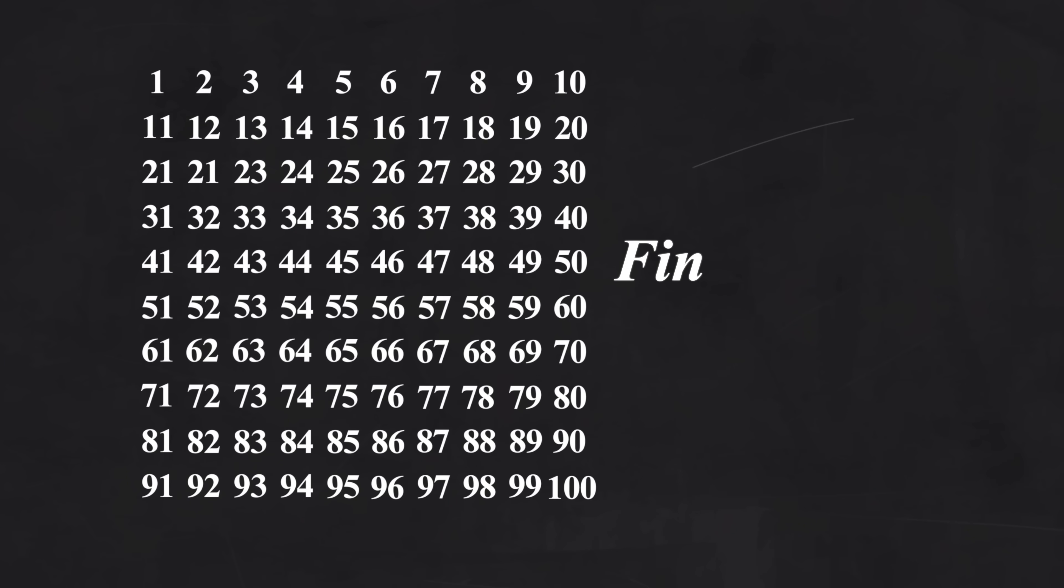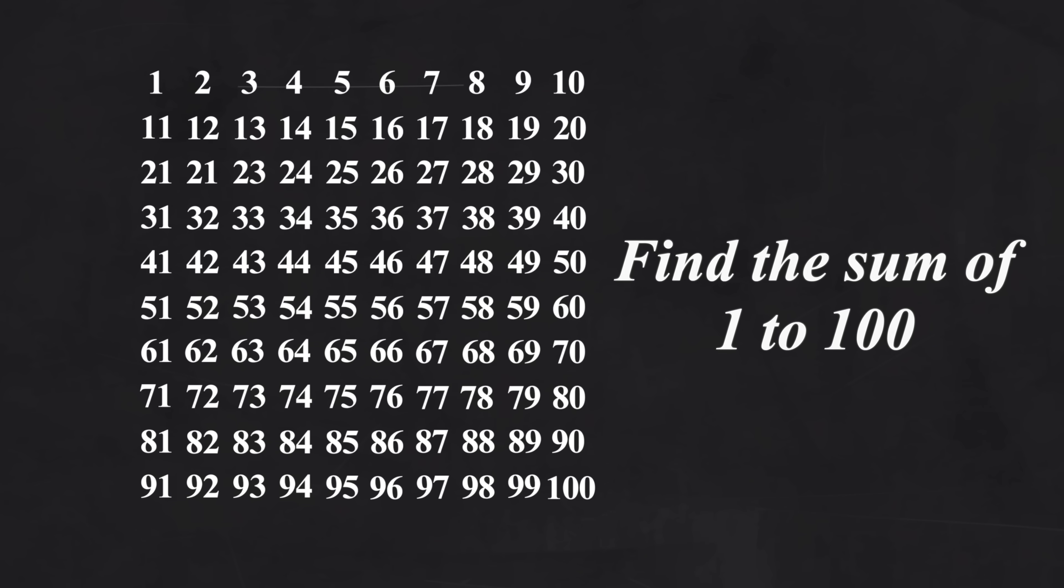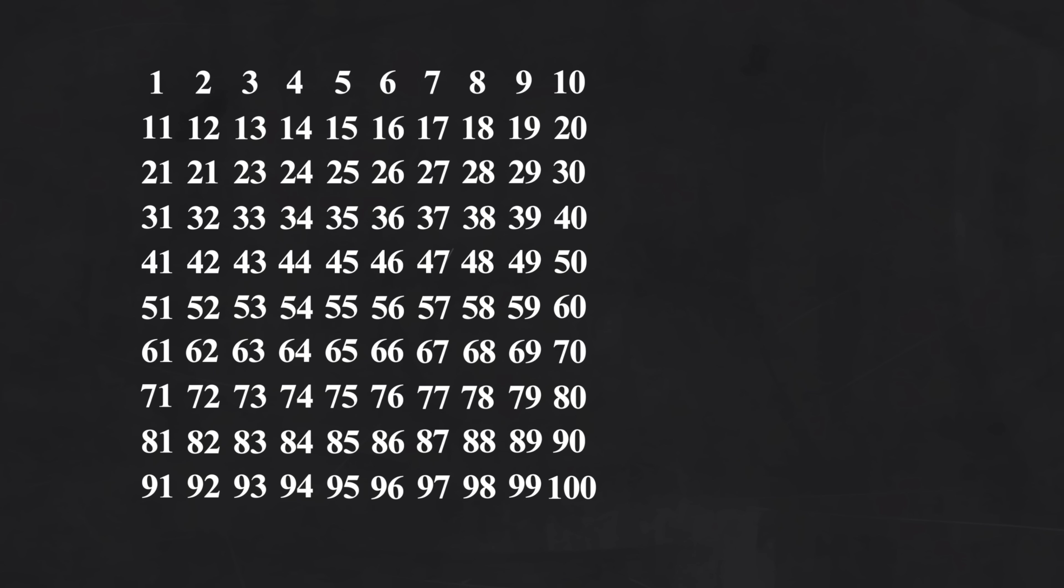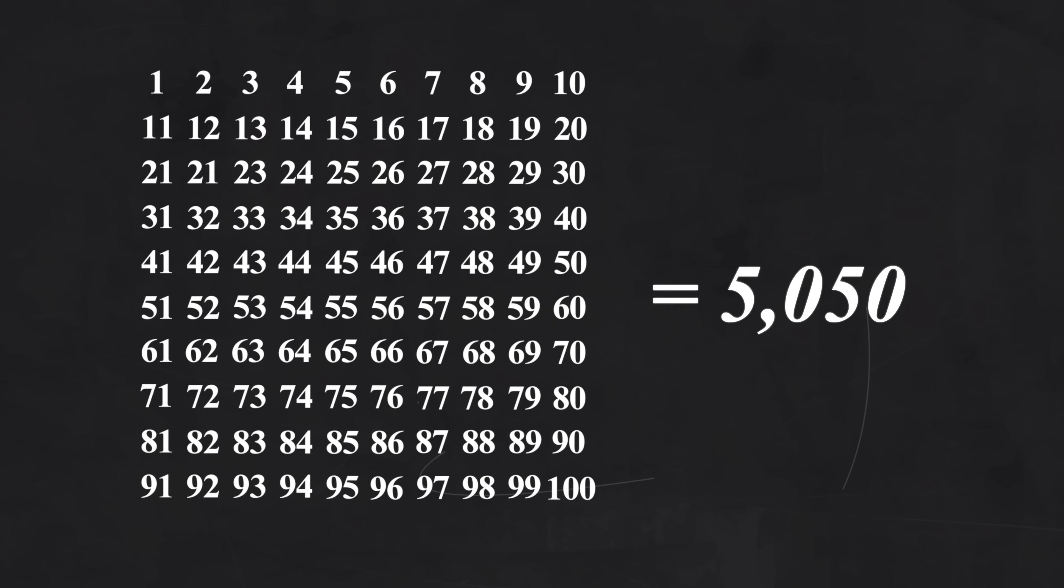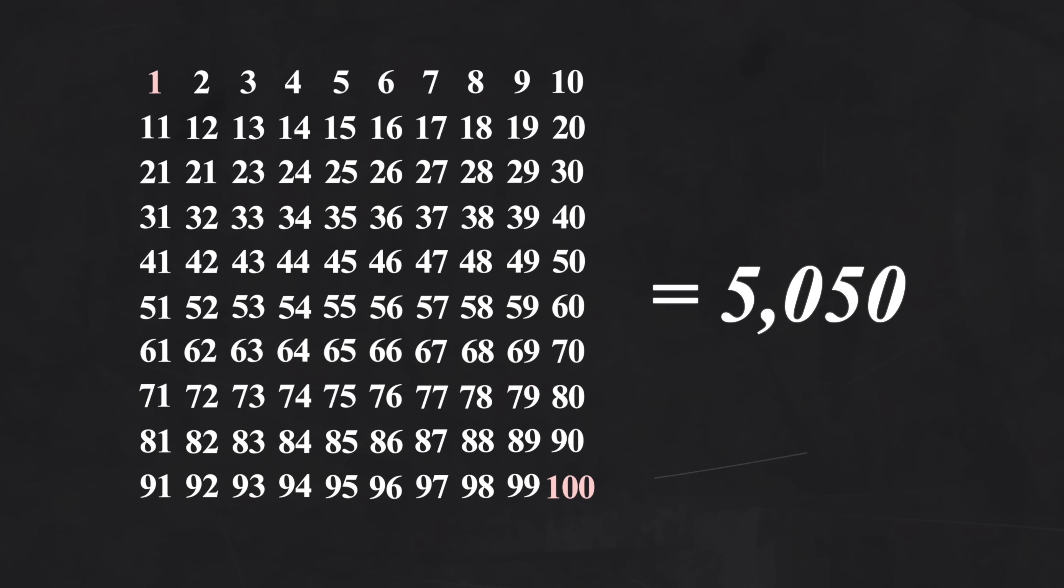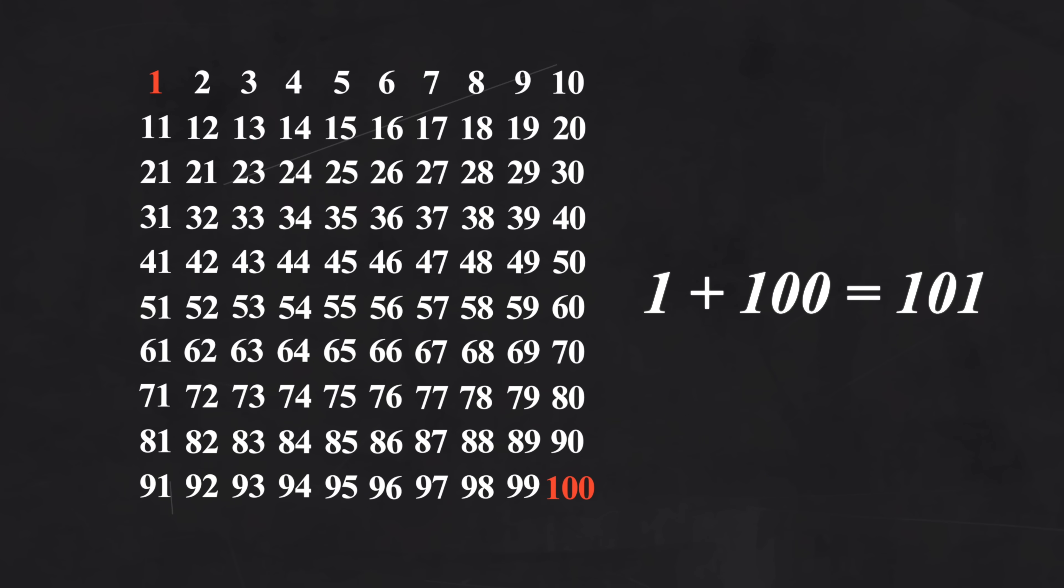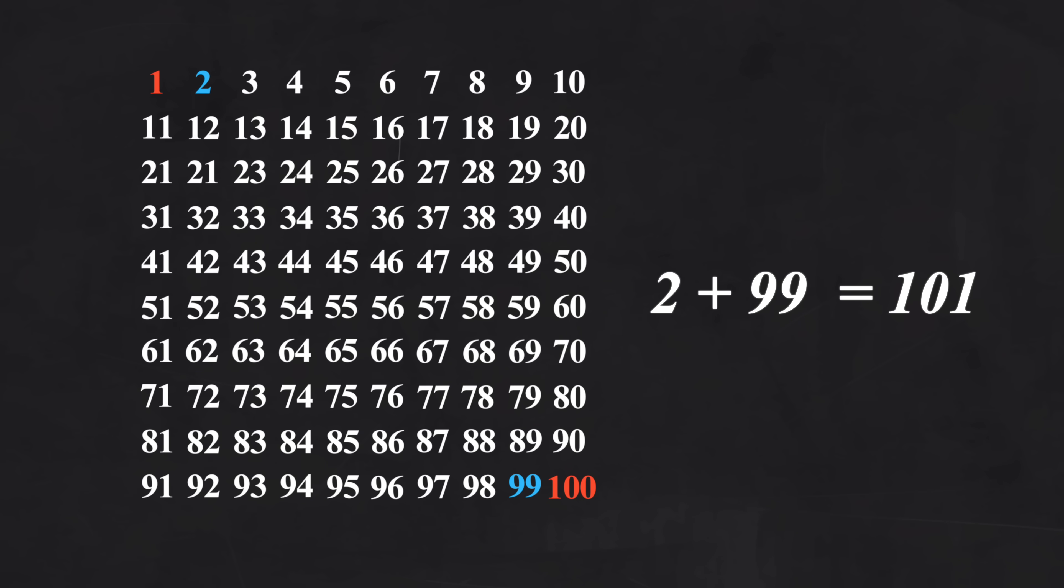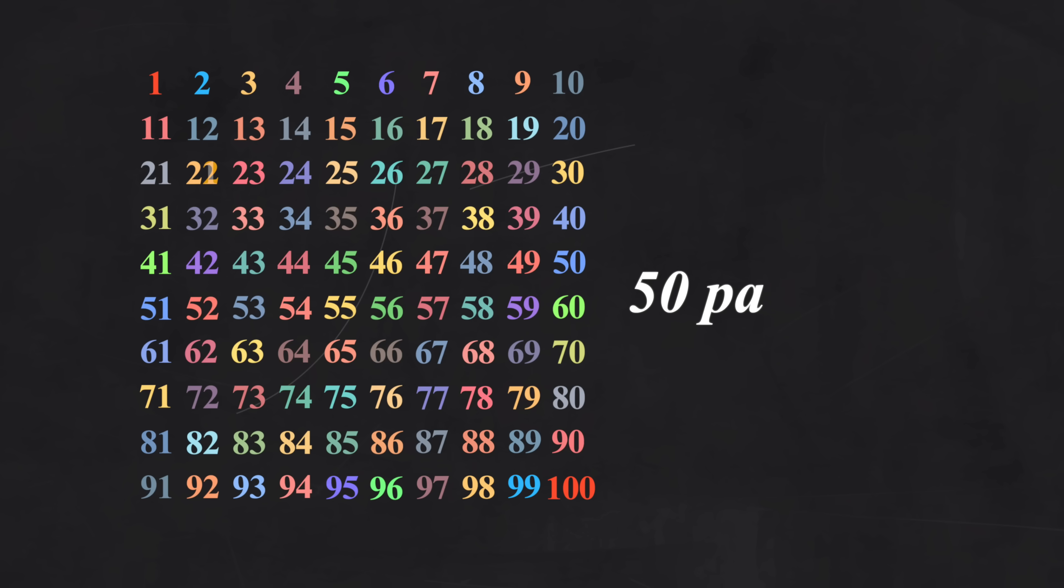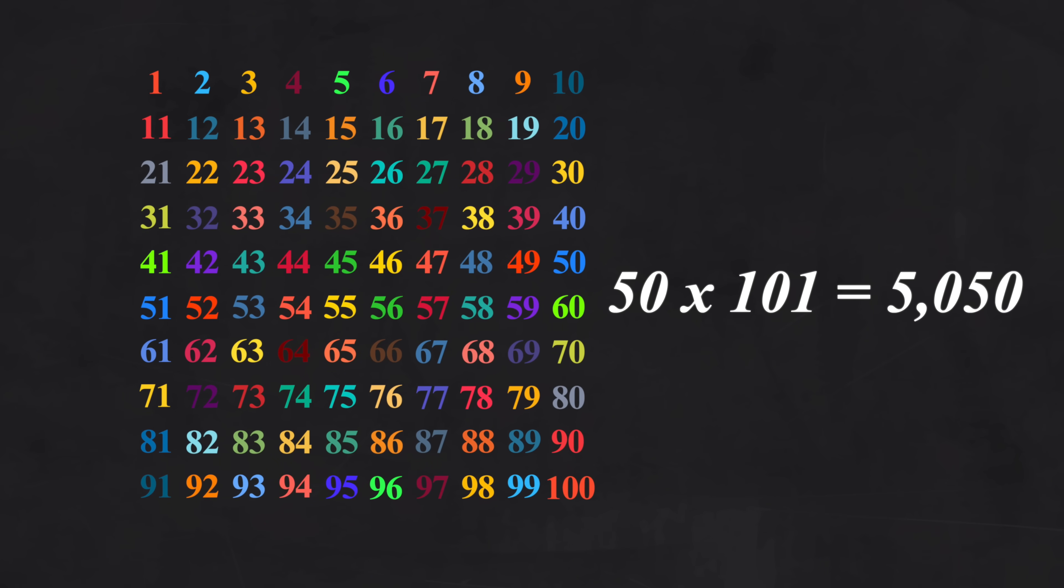One day, Herr Wüttner assigned his students the task of finding the sum of all the numbers from 1 to 100, expecting it to take a while. A few minutes later, Carl wrote down his answer: 5,050. His teacher asked how he did it so quickly. Carl explained, pairing the smallest number, 1, with the largest number, 100, gave 101. The next smallest and next largest also gave 101. With 50 such pairs, the sum was simply 50 times 101 equals 5,050.